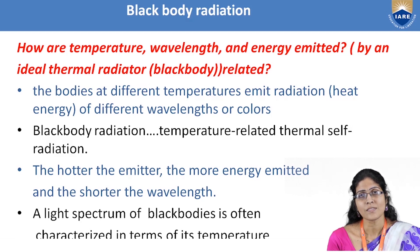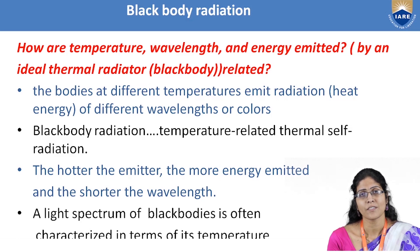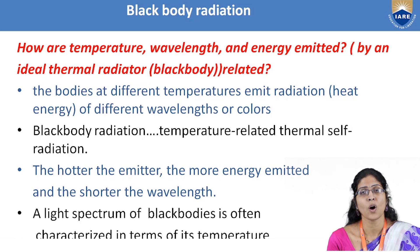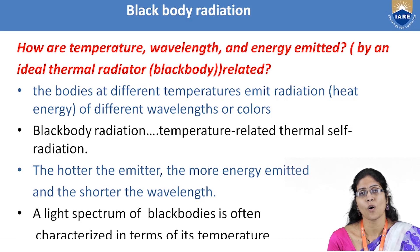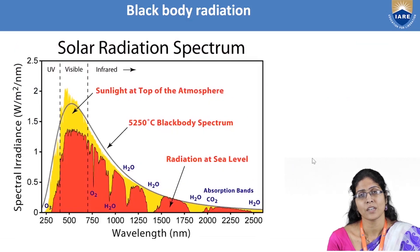Black body radiation, when really looked into it, is a theoretical temperature-related thermal self-radiation. The hotter the emitter, the more energy is emitted and the wavelength shifts towards the shorter range. The light spectrum of black bodies is often characterized in terms of its temperature.